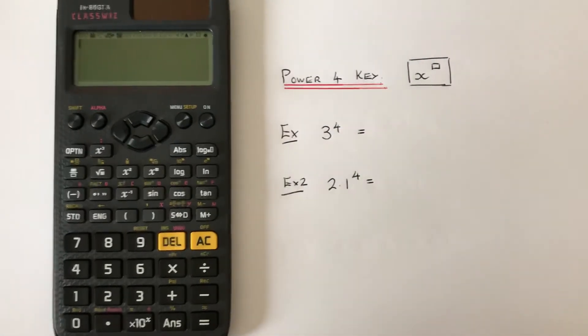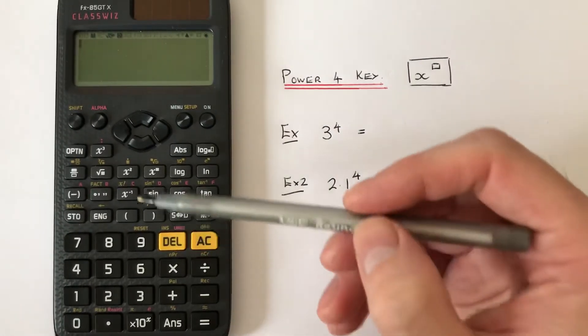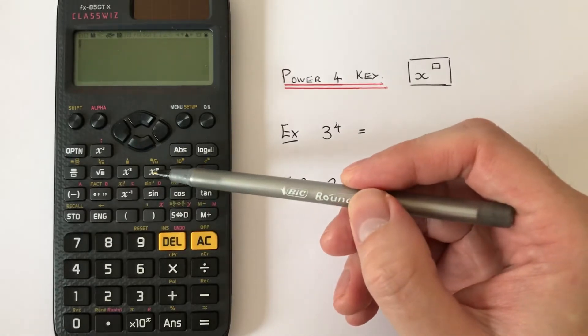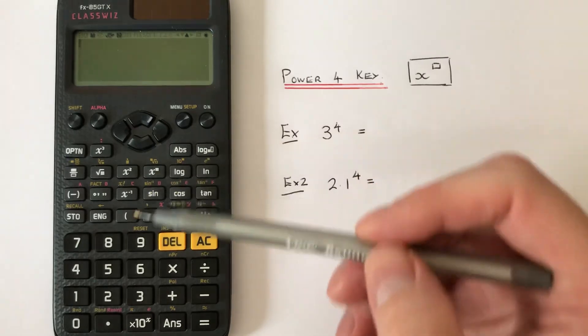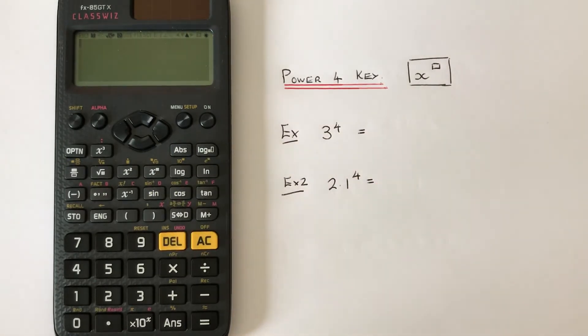To do this, you'll need to use the power key located on the second row of the scientific functions. Let's have a look at example 1.